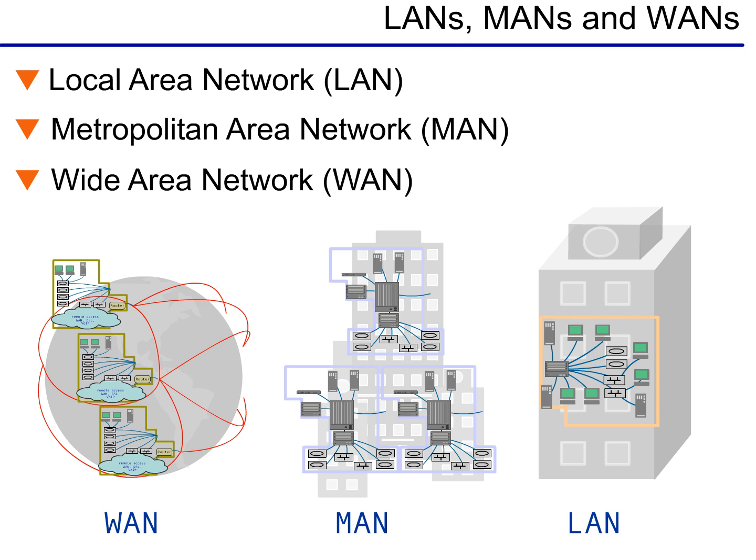LAN networks are used for computers located within one building or small campus environment. A metropolitan area network, or MAN, connects individual LANs at different sites. As the name implies, MANs are designed to connect computers around a metropolitan area or city.